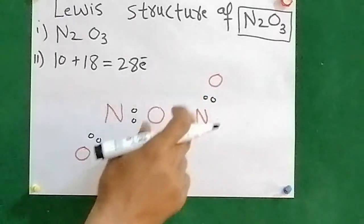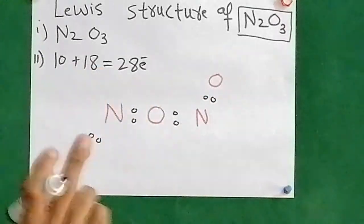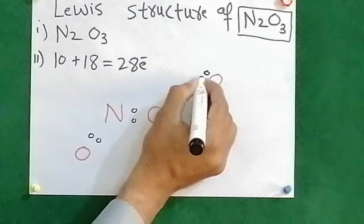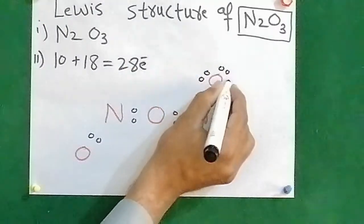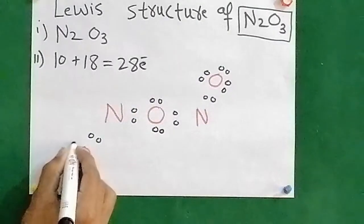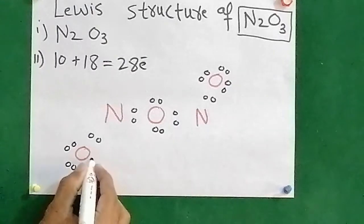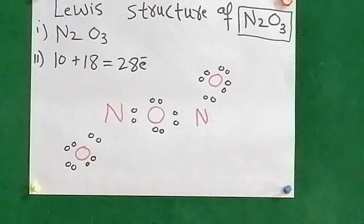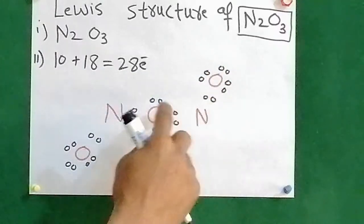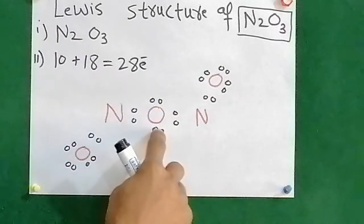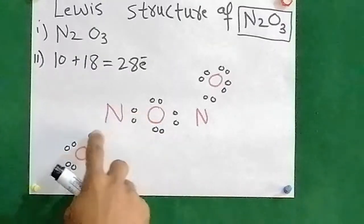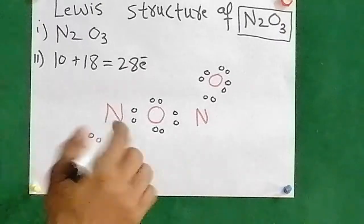These two dots fulfill one bond between atoms. So, total 28 electrons — two dots here, two dots here, two dots here, two dots here, two dots here, two dots here, two dots here, two dots here, two dots here. Counting: 2, 4, 6, 8, 10, 12, 14, 16, 18, 20, 22, 24 electrons placed.